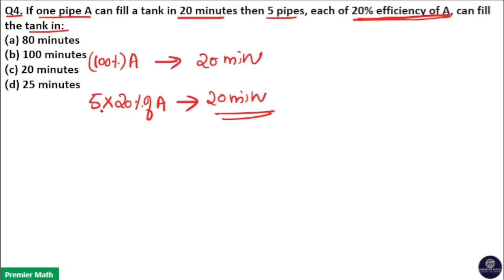20% of A into five pipes means 100% of A. So these five pipes each of 20% efficiency of A will fill the tank in 20 minutes. So option C is your answer.